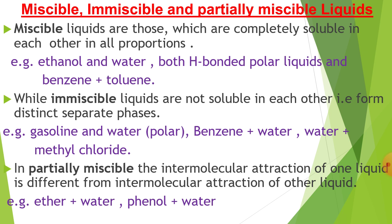Next, immiscible liquids — as the name indicates, they form different separate layers. Immiscible liquids are not soluble in each other; they form distinct separate phases. The common example is gasoline (petrol) plus water — water is polar but gasoline is non-polar, so they form separate layers. Other examples are benzene plus water, and water plus methyl chloride.